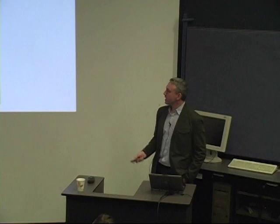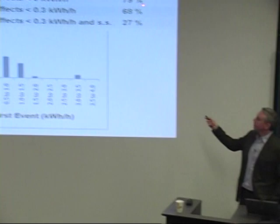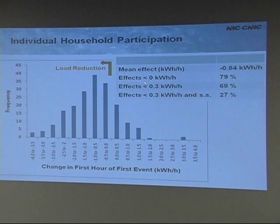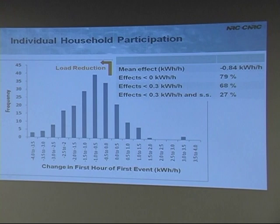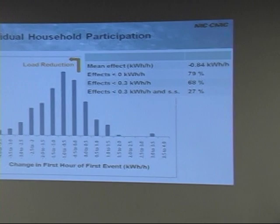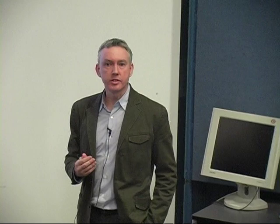The question arises: which houses were really participating? Some houses would have used less power that hour anyway just by chance or random effects. About 79% of houses used less power in that first event hour. If you apply a higher threshold — say a reduction of at least 0.3 kilowatts to count as having an effect — it drops to 68%. If you require that reduction to also be statistically significant, you're down to just 27% of households.